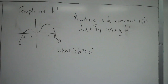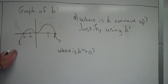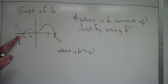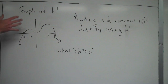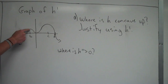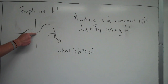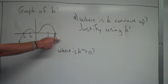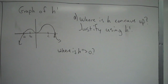So let's look on this graph right here. The slope is positive starting at negative infinity going all the way up to B. Then the slope is negative from B up until zero. The slope is then positive from zero till C. And from C to infinity, the slope is negative.